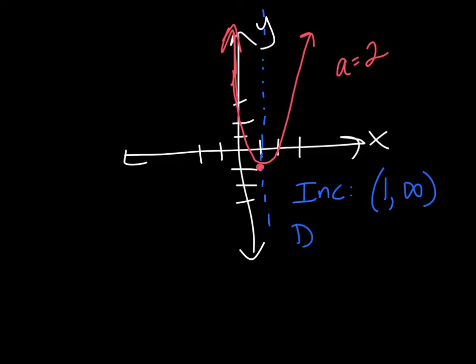And it's decreasing before that, so all the way from negative infinity all the way up to 1. Again, not including 1 because right at 1 it's not doing either. So there's my two intervals where it's increasing and decreasing, and it's all based on my vertex. And it's based on the x part of the vertex because we're giving the x interval where it increases and decreases.